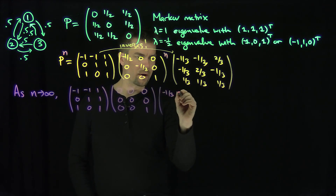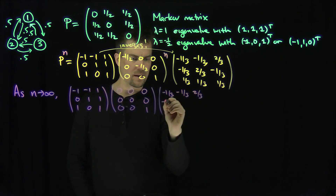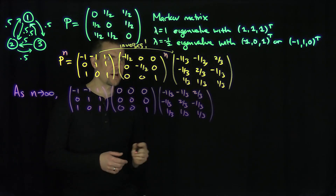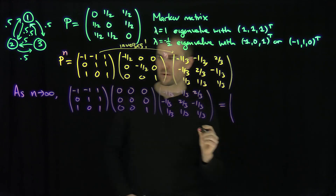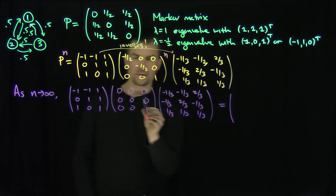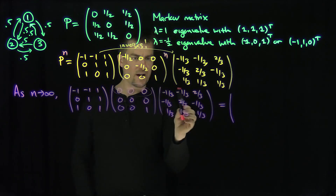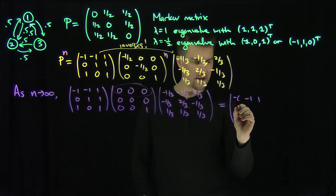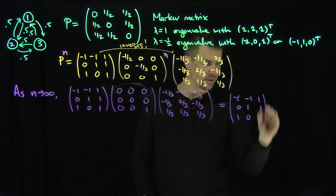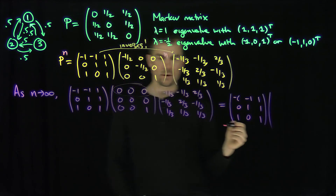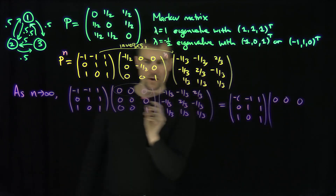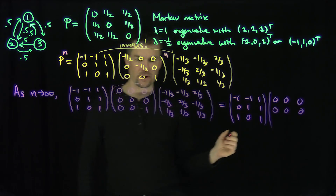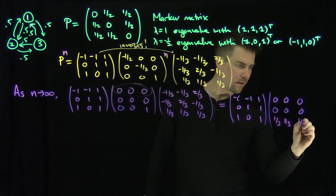So as N→∞, P^N becomes the eigenvector matrix times [0, 0, 0; 0, 0, 0; 0, 0, 1] times the inverse. Doing the row-dot-column calculations: the first two columns of the middle matrix are all zeros, giving zero contributions. The last column gives one-third, one-third, one-third for every row. So we get one-third, one-third, one-third in every entry.